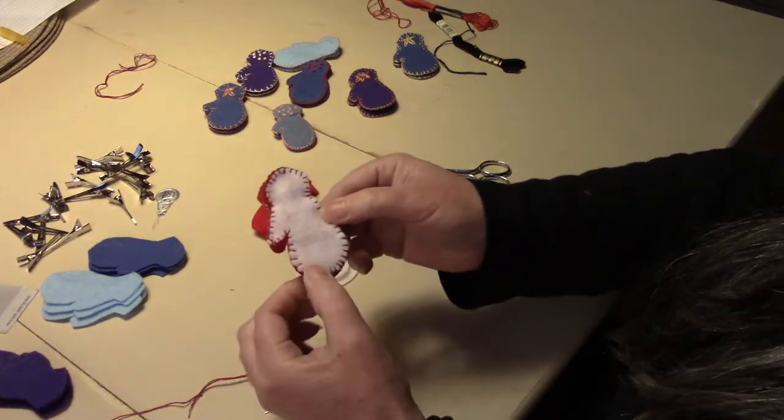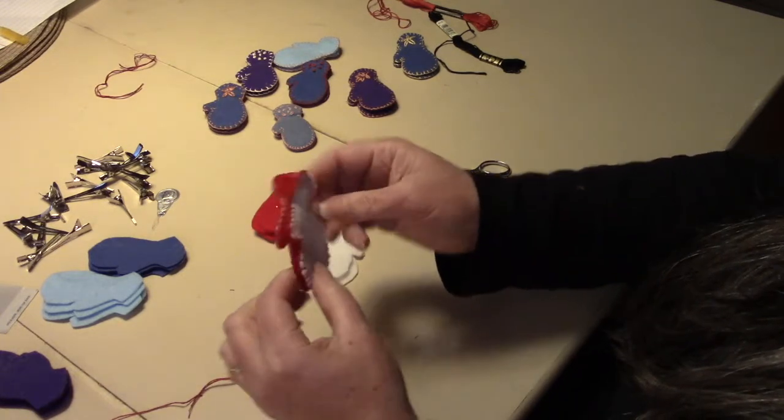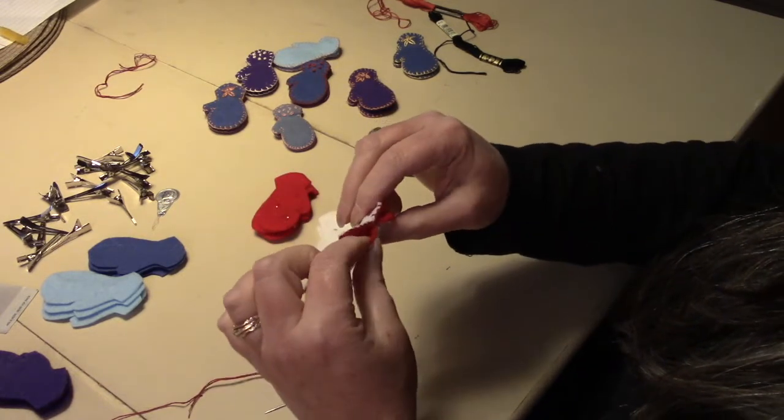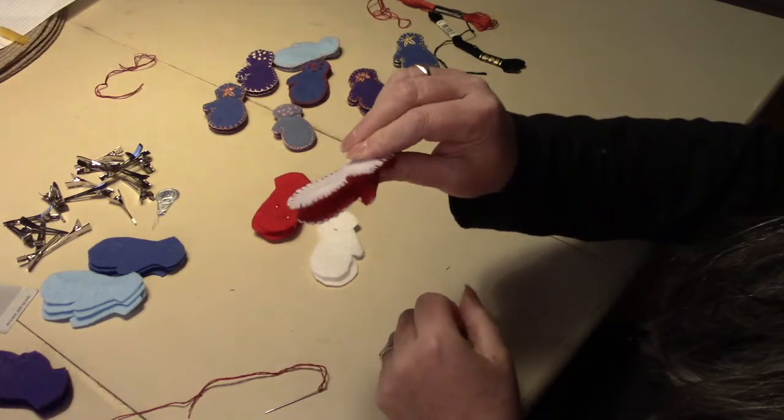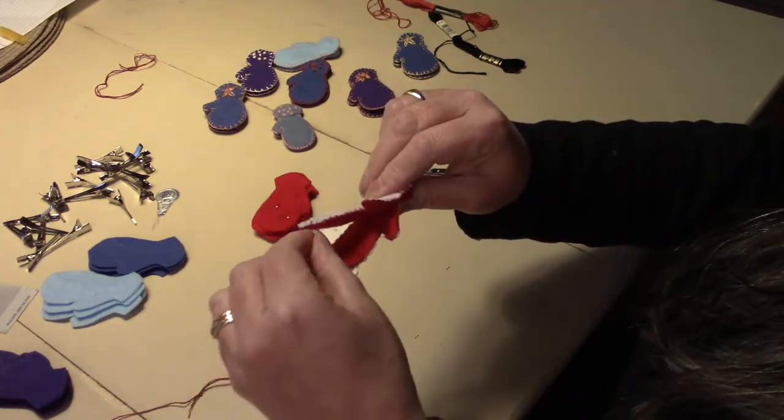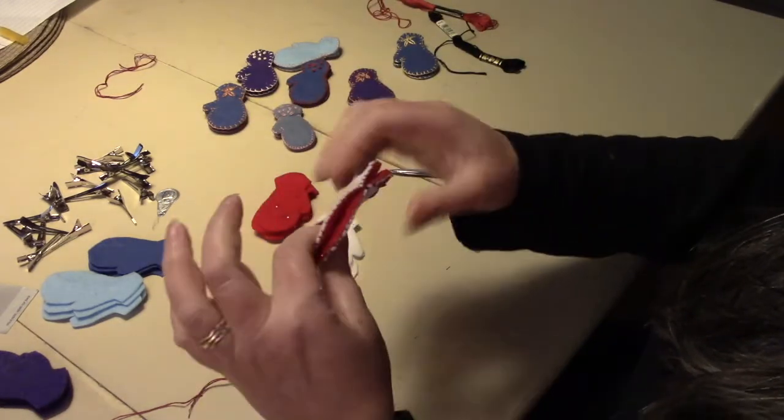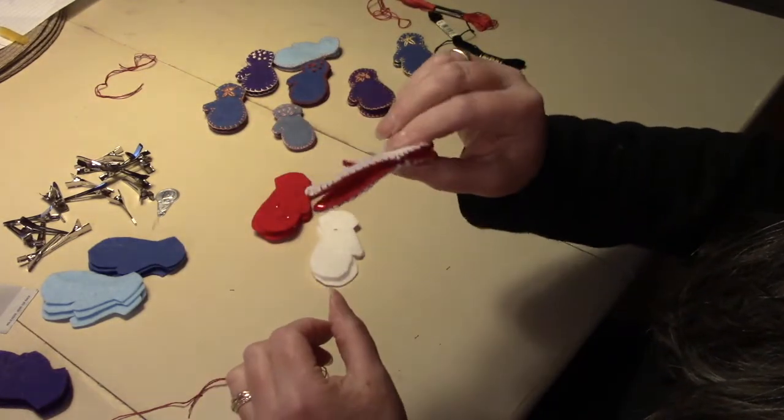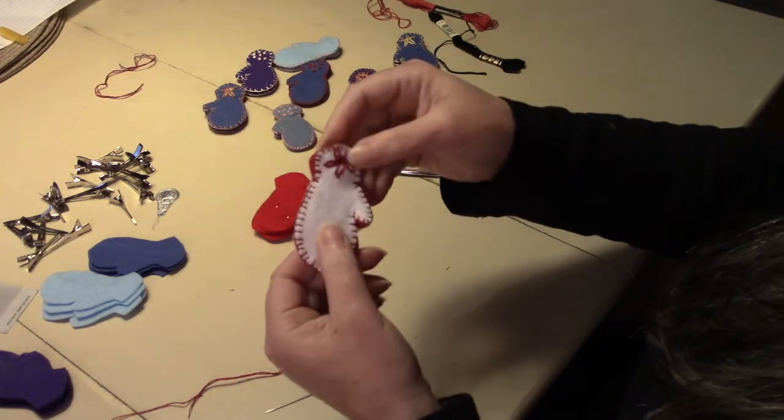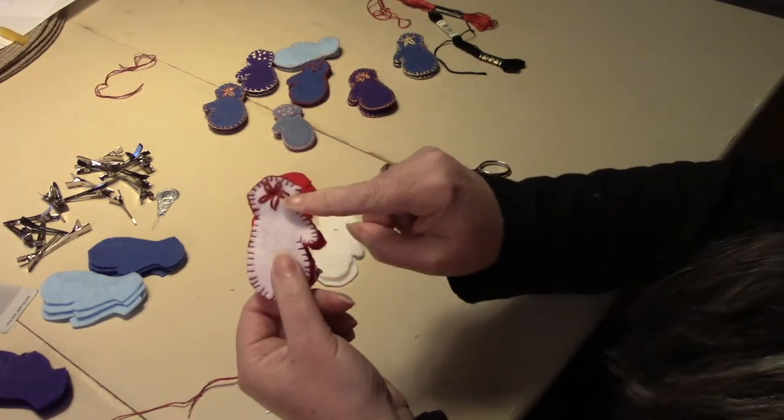So now I've stitched around, blanket stitched all the way around each side of each mitten. You can see how when you pinch it open, the felt is on either side of that clip. We've done the decorative stitch up here.